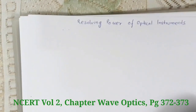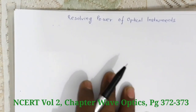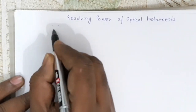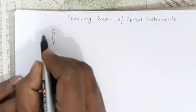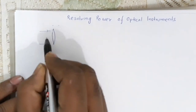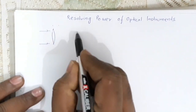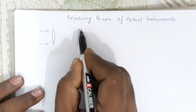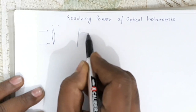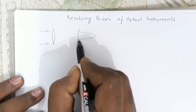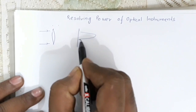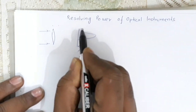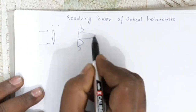Now while studying the diffraction concept, you have seen that for a light coming from a single slit, it is made to pass through a lens. The intensity pattern on the screen shows a central maxima, and then the intensity of the secondary maxima keeps on decreasing.